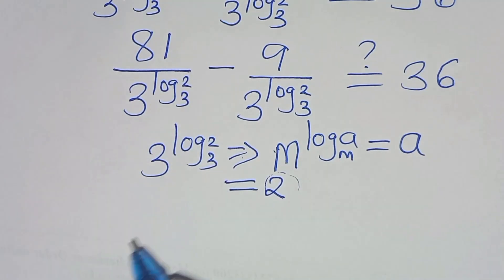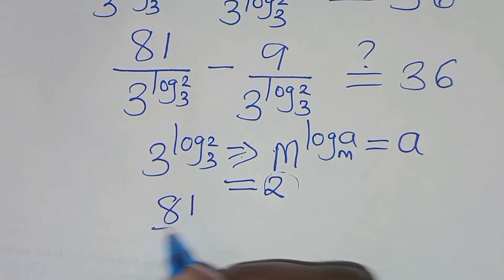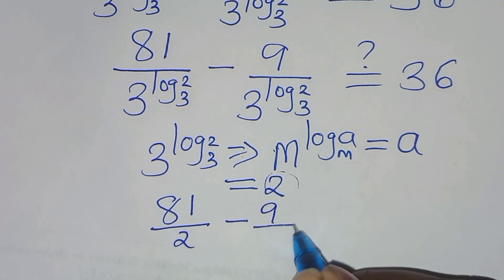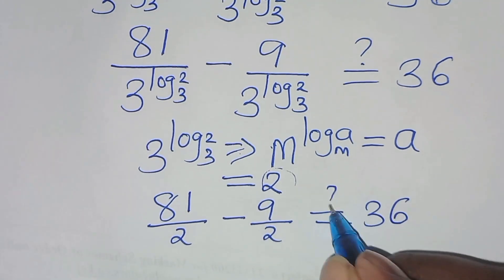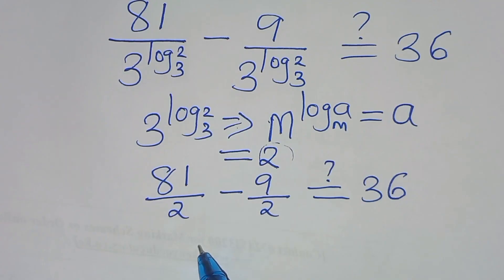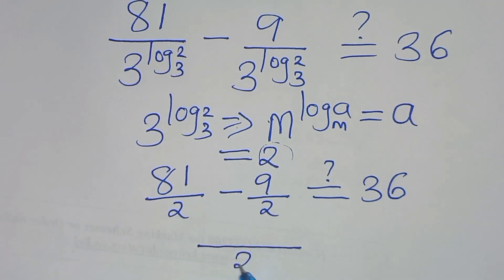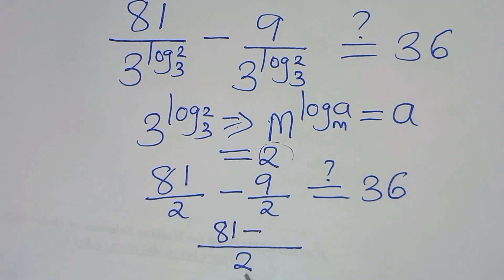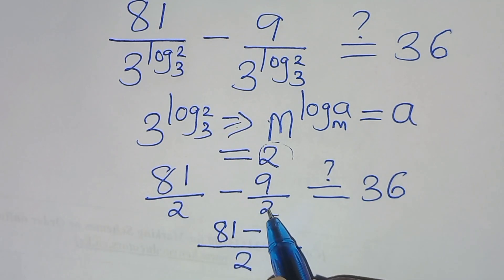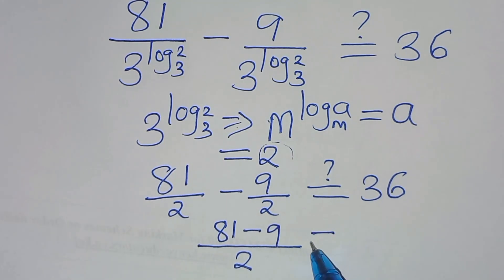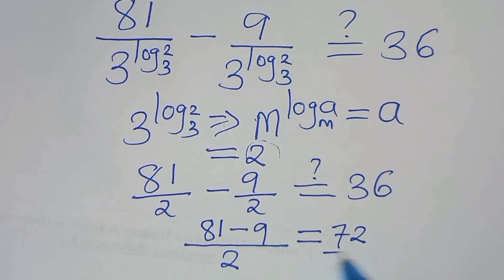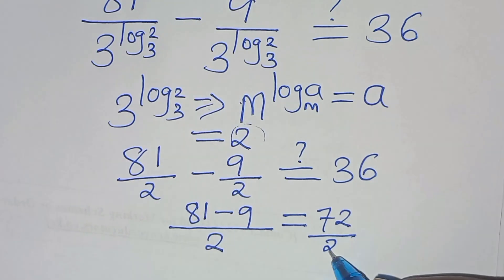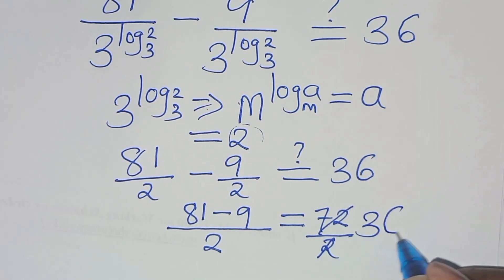Let's substitute these. So we have 81 over 2, subtract 9 over 2. This is supposed to give us a value of 36. The LCM here is 2, so 81 minus 9 over 2 equals 72 over 2, and 72 divided by 2 is equal to 36.